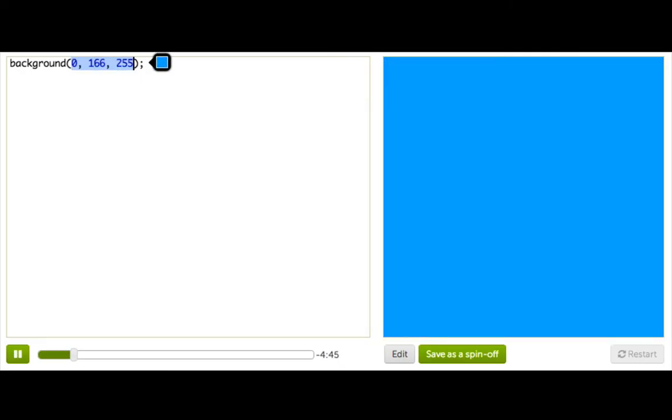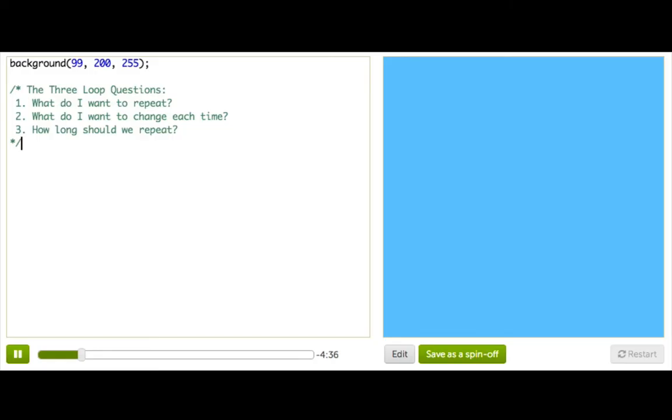Now, since we want to draw a loop, your first thought should be those loop questions that we covered last time. And we'll go through them pretty quickly this time, so if you need a review, just revisit the draw it with while loops. Now, the first question: What do we want to repeat?